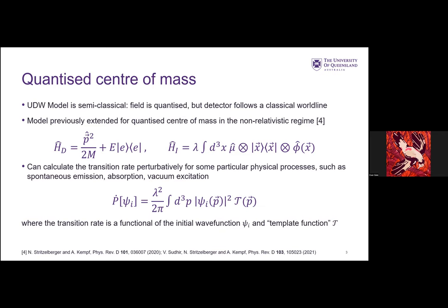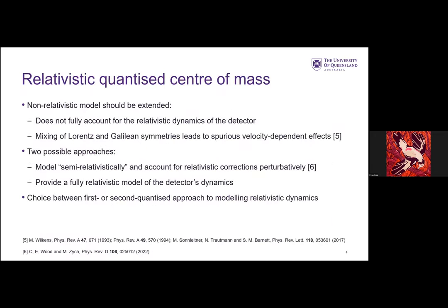Now we can sort of take this framework and consider the case extended a bit more. The reason for this is that in the non-relativistic model, we're not fully accounting for the relativistic dynamics of the detector, and in particular we're mixing the symmetries. The detector obeys some Galilean symmetry while the field is described by the Lorentz group, and the mixing of these symmetries can lead to some spurious velocity-dependent effects.